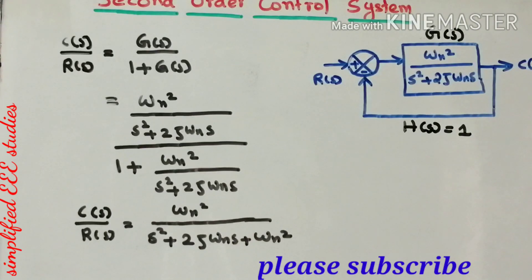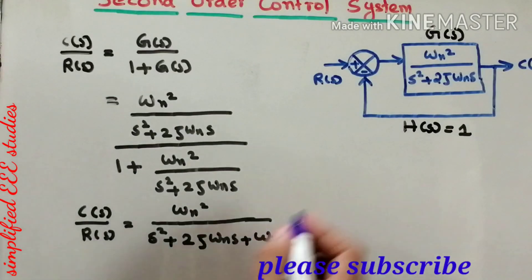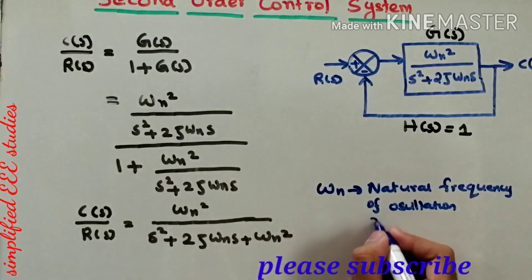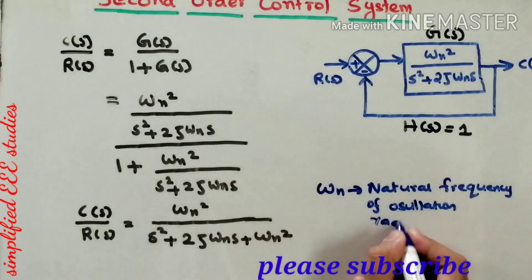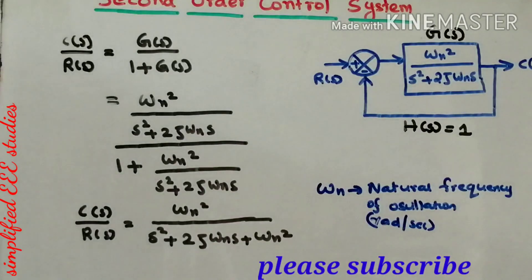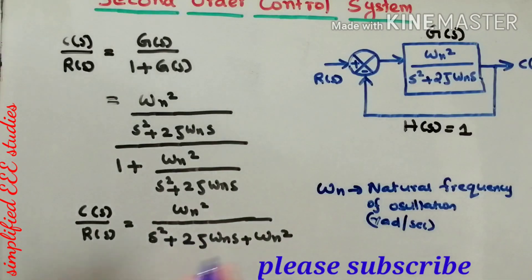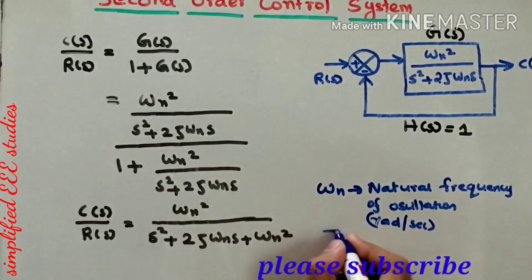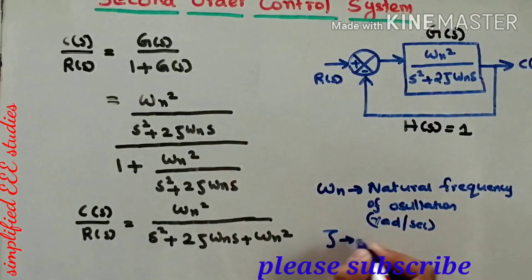Here I would like to introduce omega n, which is known as the natural frequency of oscillation, expressed in radians per second. Similarly, there is one more important coefficient known as zeta, the damping ratio.